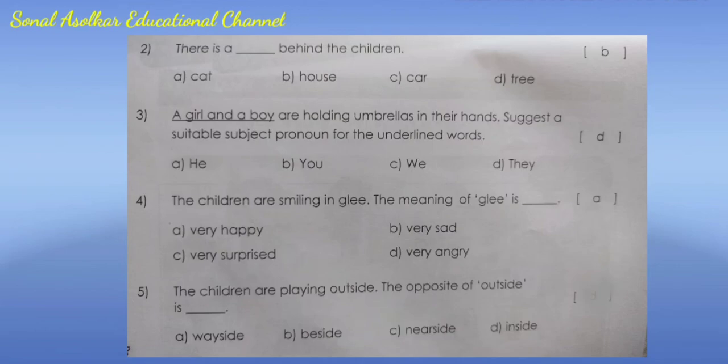Question 5: The children are playing outside. The opposite of 'outside' is: options A) wayside  B) beside  C) near side  D) inside. The correct answer is option D - inside. This module is now completed. Everyone has to read it properly two times and complete the writing work in your grammar book and notebook. Thank you.